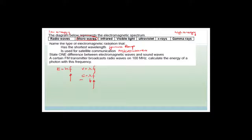The question asks: state one difference between electromagnetic waves and sound waves. Electromagnetic waves are transverse waves, whereas sound waves are longitudinal.